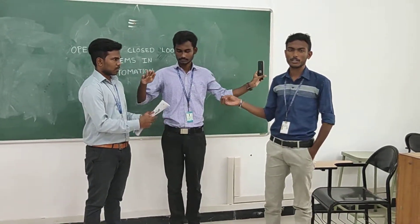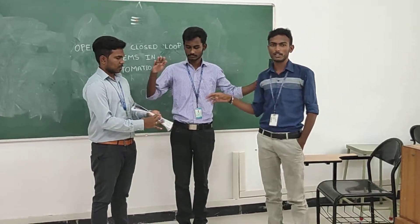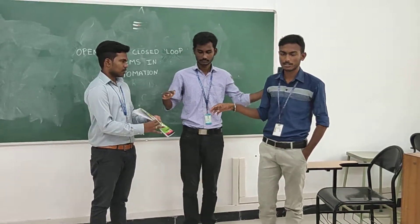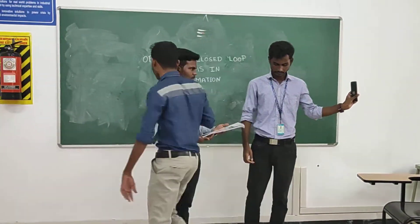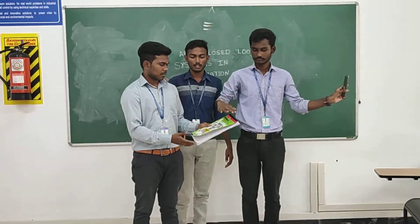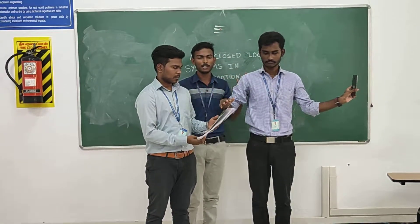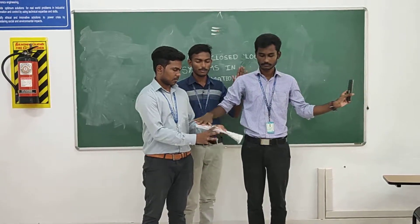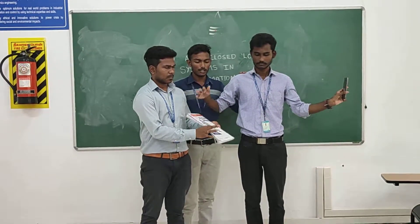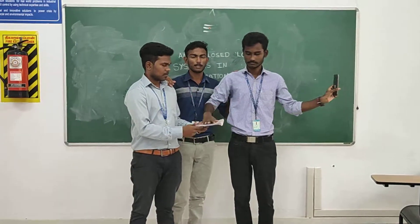In the closed loop system, we are going to have feedback. In the closed loop system, we have a feedback system. We are connected with a speed sensor in the system. The speed sensor will be connected with the computer and robot. Now the robot can pack the product properly.